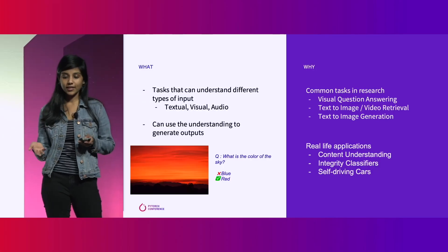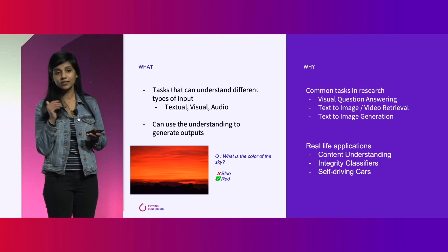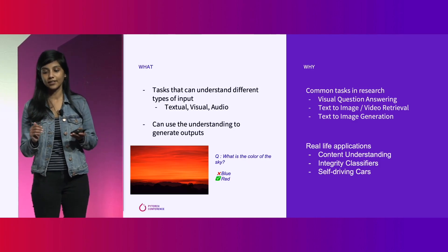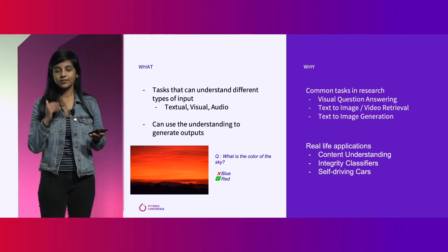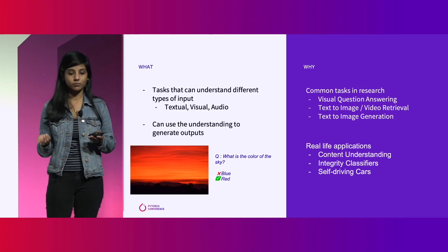A popular one from research is visual question answering. Given an image and a question, the task is to predict the correct answer. It's critical to incorporate understanding of data from different modalities to get to the right answer — in this case, the image signals are critical for understanding if the color of the sky is red or blue.